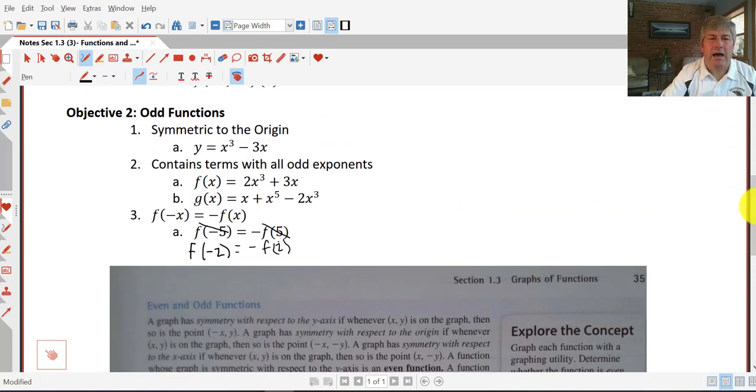So going back to the odd functions, an odd function is going to contain terms with all odd exponents. Conversely, the even function had all even exponents. Okay, so we have, you know, x cubed and x to the first, and we have x to the fifth and x cubed and x.